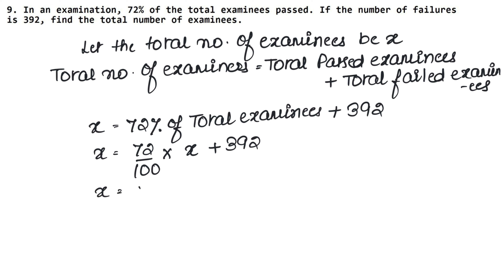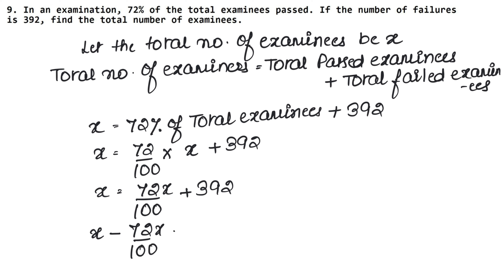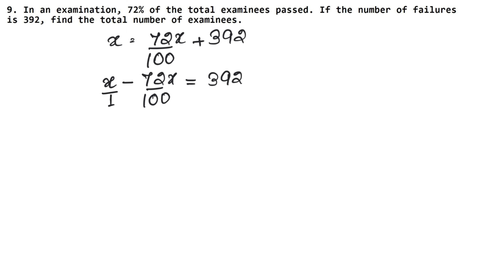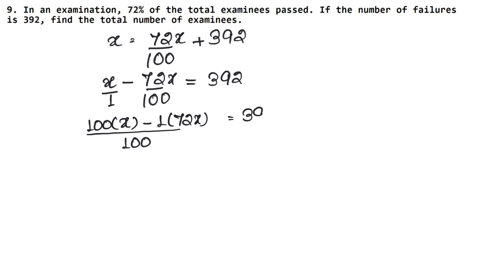So X equals 72X upon 100, plus 392. Now bringing X terms together: X − 72X/100 = 392. X has no denominator so we write 1 under it. Taking LCM of 100 and 1, we get 100. Multiply 100 with X and 1 with 72X: (100X − 72X) / 100 = 392.